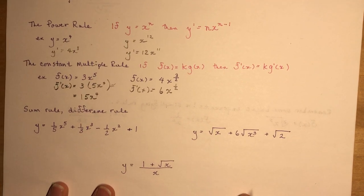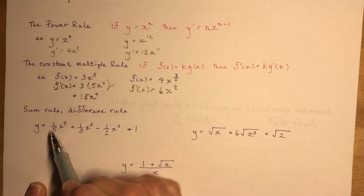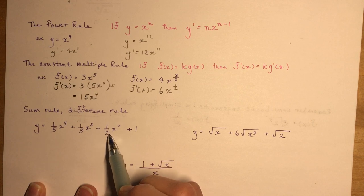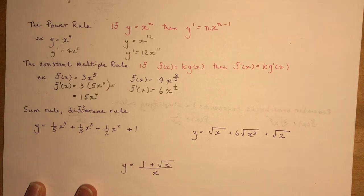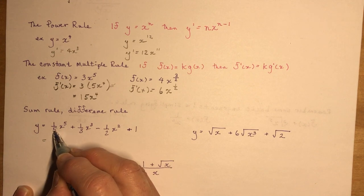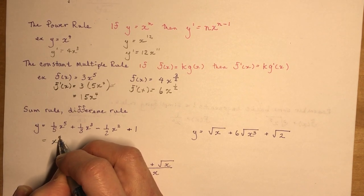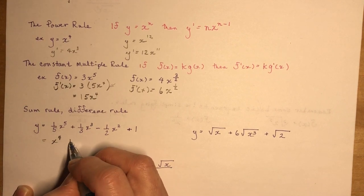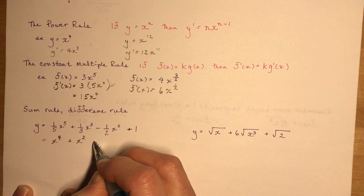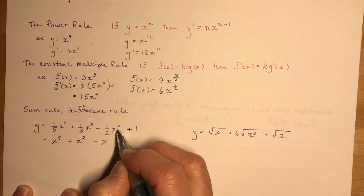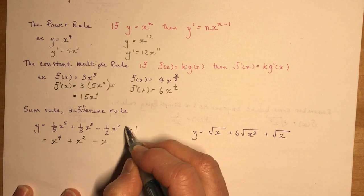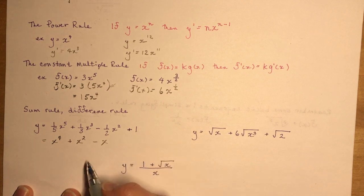The sum and difference rules say that if you have terms added or subtracted, you can take the derivative of each separately. For example: (1/5)x⁵ — 5 × (1/5) = 1, so x⁴. Then (1/3)x³ — 3 × (1/3) = 1, so x². Then (1/2)x² — (1/2) × 2 = 1, so x. And the derivative of a constant is 0, so just drop that term.